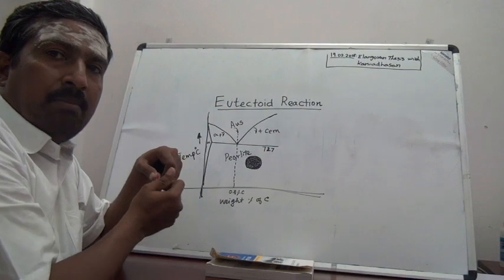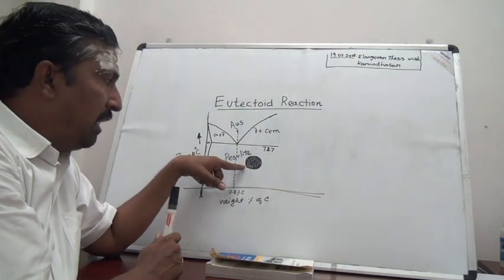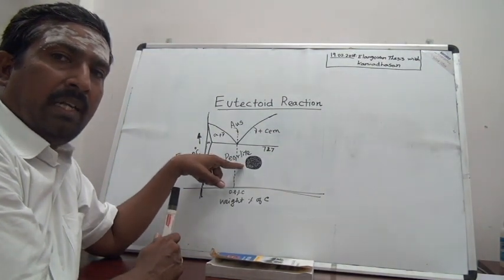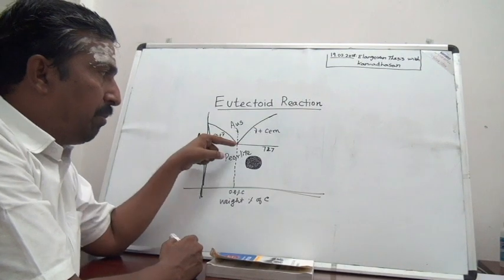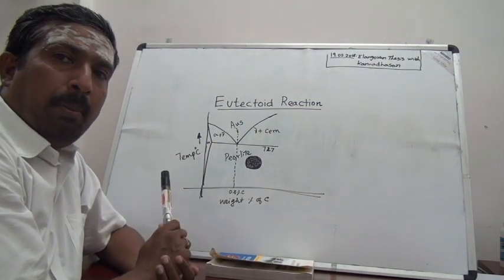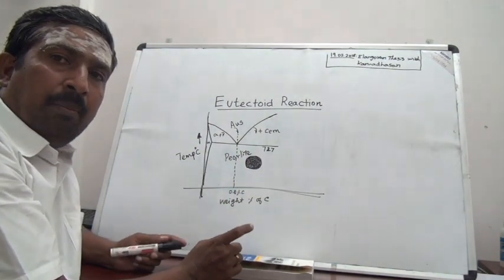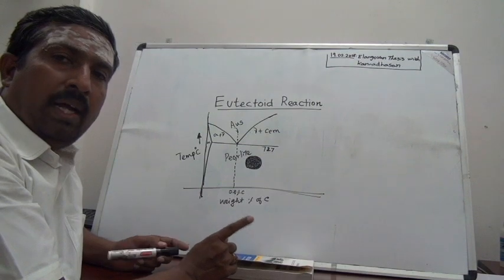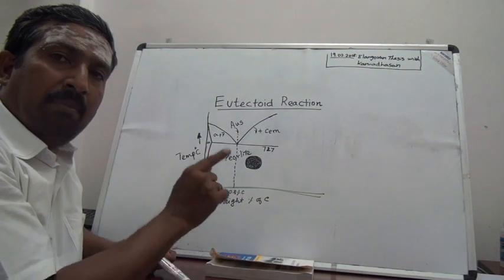By the eutectoid reaction, the austenite is transformed into pearlite. This mechanism is difficult to understand, so for explanation purposes I have taken an austenite grain model — the actual appearance is not like this, but this is for better understanding. Let us assume the 0.8 percent carbon is spread uniformly. When this temperature is reached, as per the allotropic rule, austenite should transform into ferrite. In a small area, austenite is transformed into ferrite. The maximum carbon content in ferrite is 0.025 percent, and that too is at 727 degrees Celsius.